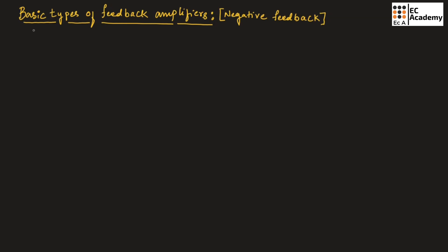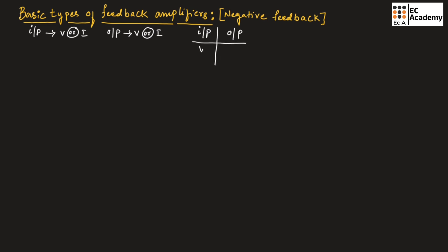If we consider any feedback amplifier, the input can be voltage or current, and the output can also be voltage or current. If input is voltage and output is current, such type of connection is known as series connection. And if input is current and output is voltage, such type of connection is known as shunt connection or parallel connection.